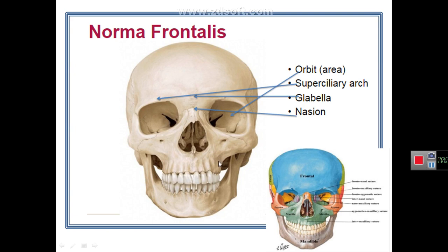The lower face shows the alveolar process of maxilla carrying the teeth, and the mandible also shows an alveolar process for its teeth. Above the canine tooth is a prominent bone called the canine prominence. Medial to this canine prominence is a fossa called the incisor fossa, because it lies above the incisor teeth, and lateral to it is the canine fossa.